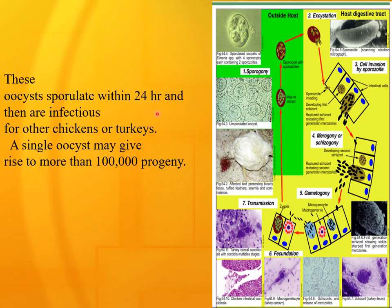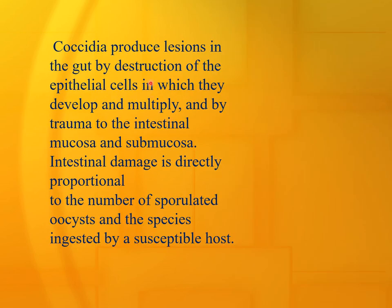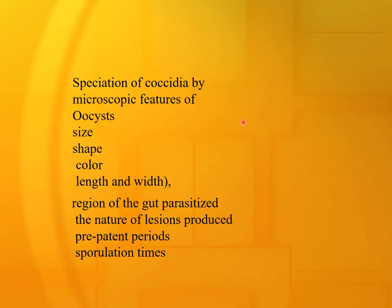These oocysts sporulate within 24 hours and are then infectious for other chickens or turkeys. A single oocyst may give rise to more than 100,000 progeny. Coccidia produce lesions in the gut by destruction of epithelial cells in which they develop and multiply, and by trauma to the intestinal mucosa and submucosa. Speciation of coccidia is based on microscopic features: oocyst size, shape, color, length, and width.